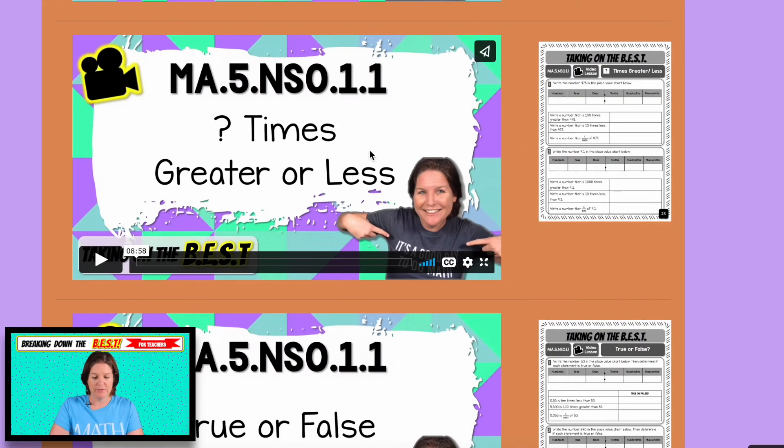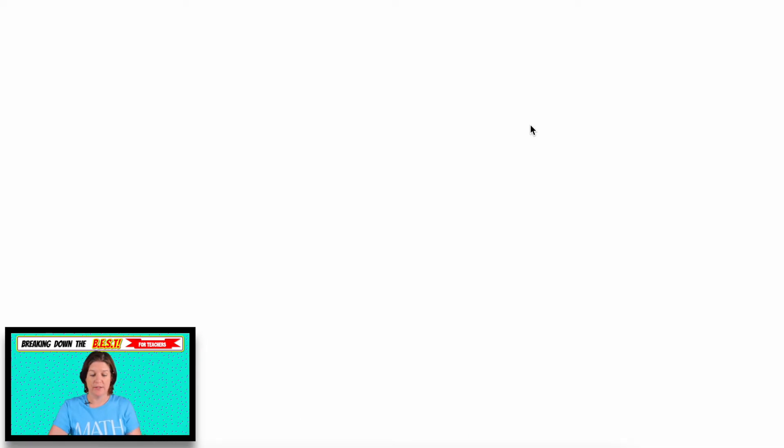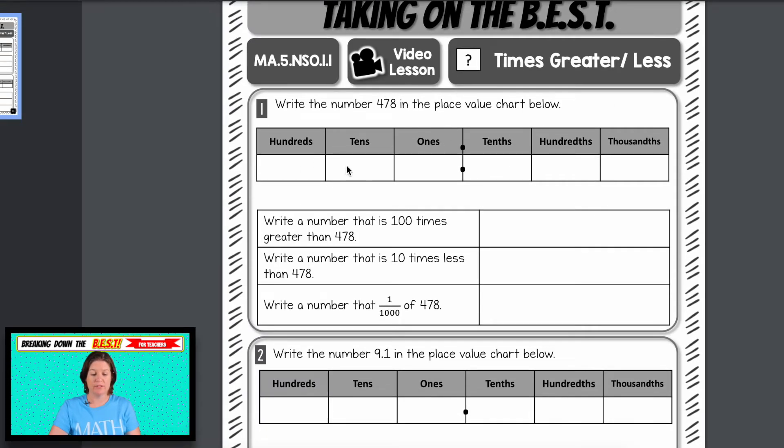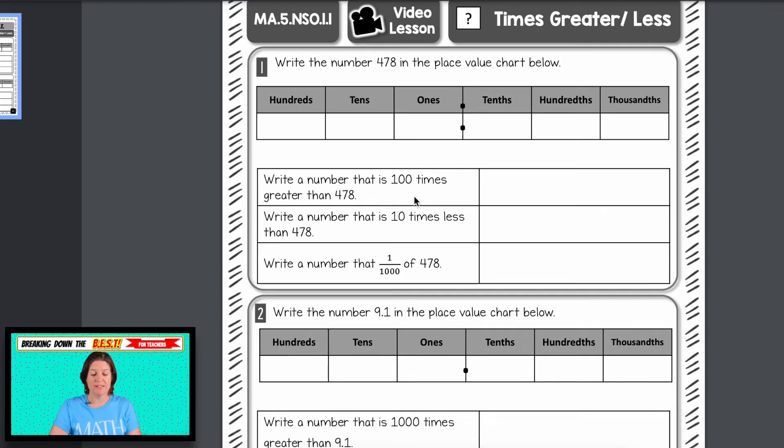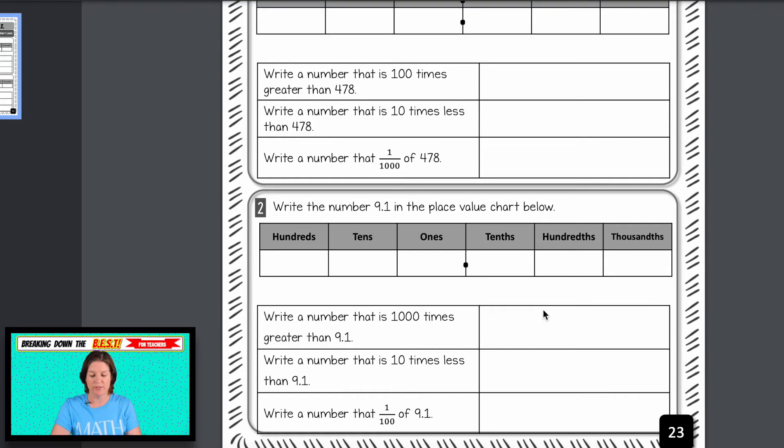Then for the next video, it's how many times greater or less. So we're placing the number 478 in the place value chart, four, seven, eight. And now write a number that's 10 times greater than that. Write a number, I'm sorry, write a number that's 100 times greater than that. Write a number that's 10 times greater than that. Write a number that's one, one-thousandth of that number. So we're practicing all of that with two examples.